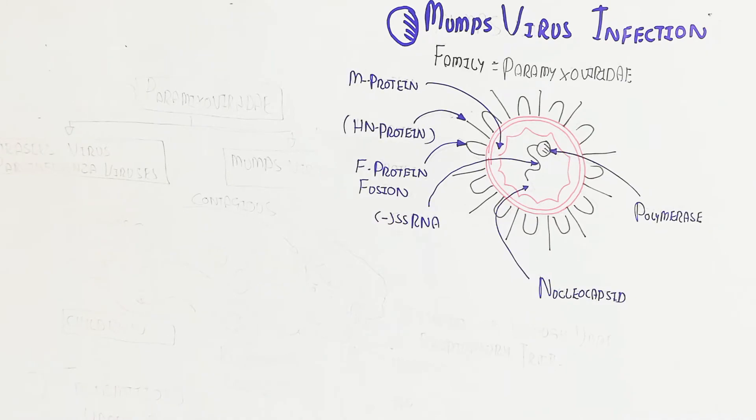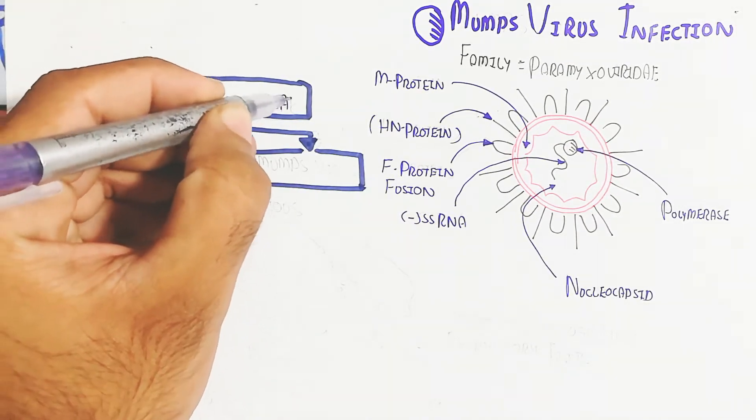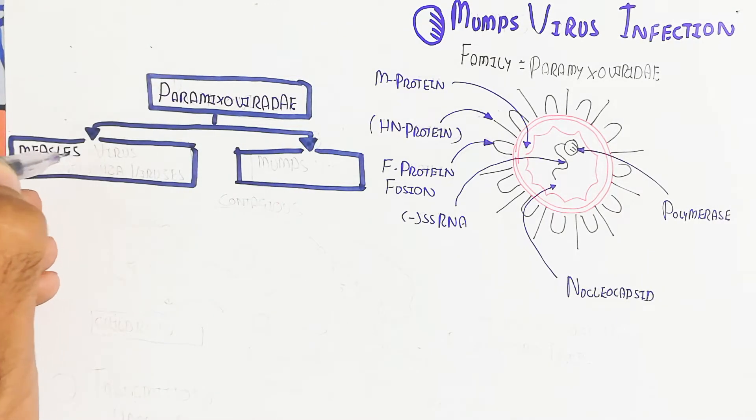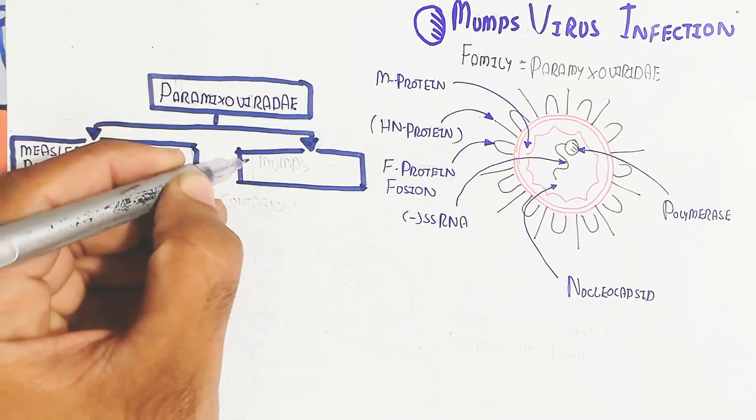Fusion protein is used for fusion with the host cell. This is the paramyxoviridae family, it contains measles virus, the parainfluenza virus, and the mumps virus.